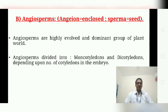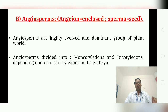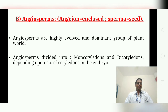The plant body is sporophytic, clearly divisible into root, stem, leaves, and flowers. The conductive system is very advanced and efficient. Plants bear flowers with accessory whorls — calyx and corolla or perianth. Microsporophylls form the androecium and megasporophylls form the gynoecium, which are called the essential whorls. The gynoecium or carpel is differentiated into style, stigma, and ovary containing ovules.